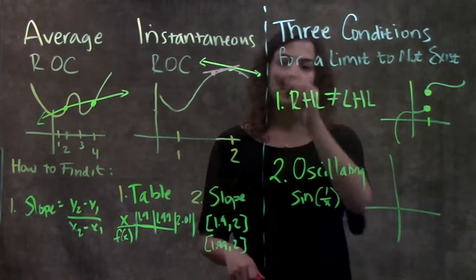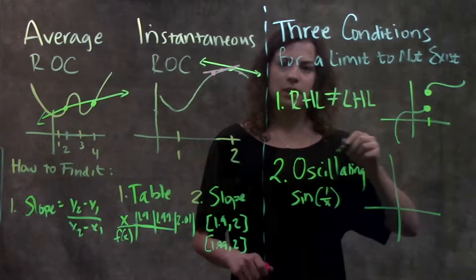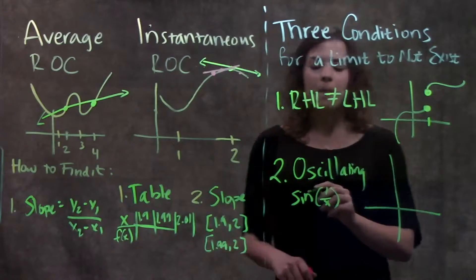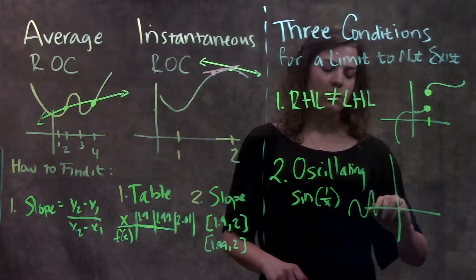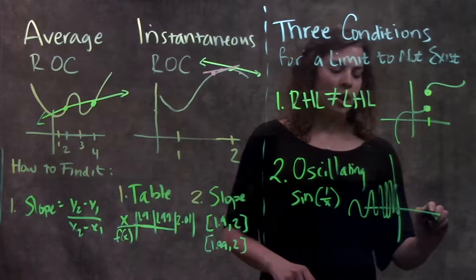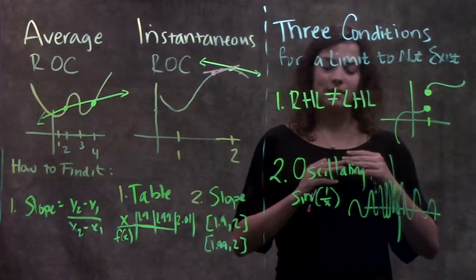An example of this is a function sine of one over x. So sine of x usually is a periodic function. It goes up and down at a regular pace, but the function sine of one over x, as it gets closer and closer to zero, it starts oscillating super fast up and down from both sides.